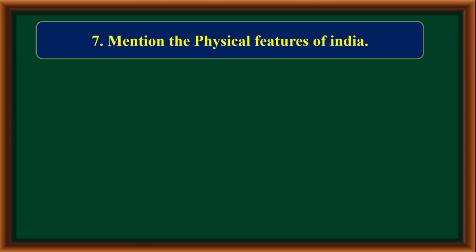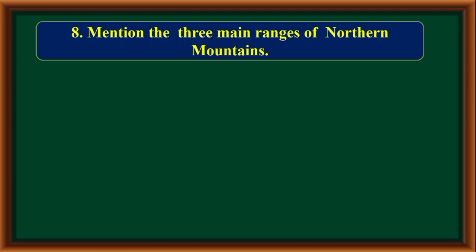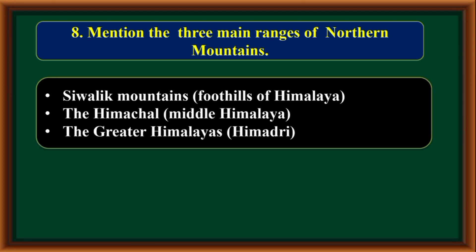Mention the physical features of India: Northern Mountains, Northern Great Plain, Peninsular Plateau, and Coastal Plains. The three main ranges of the northern mountains are: the Sivalik Mountains (foothills of the Himalaya), the Himachal or Middle Himalaya, and the Greater Himalayas or Himadri.